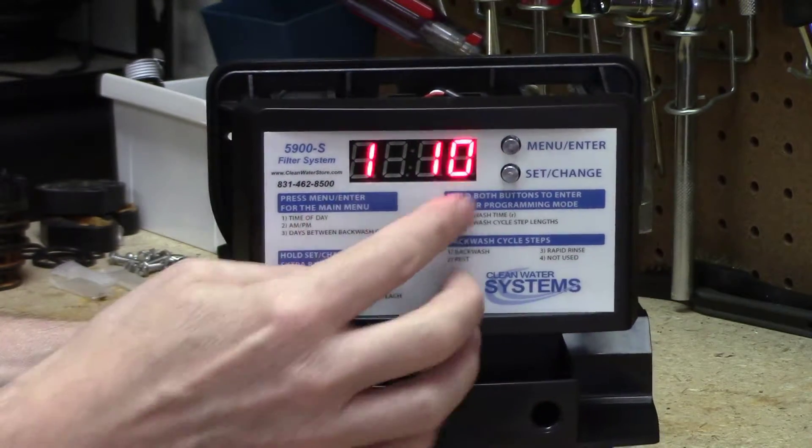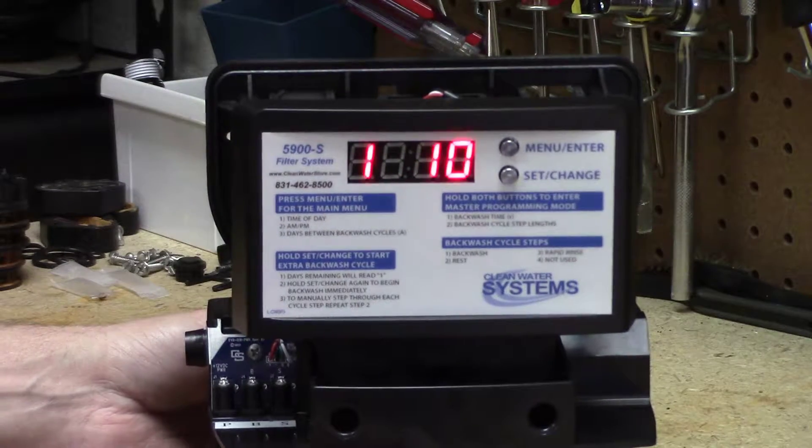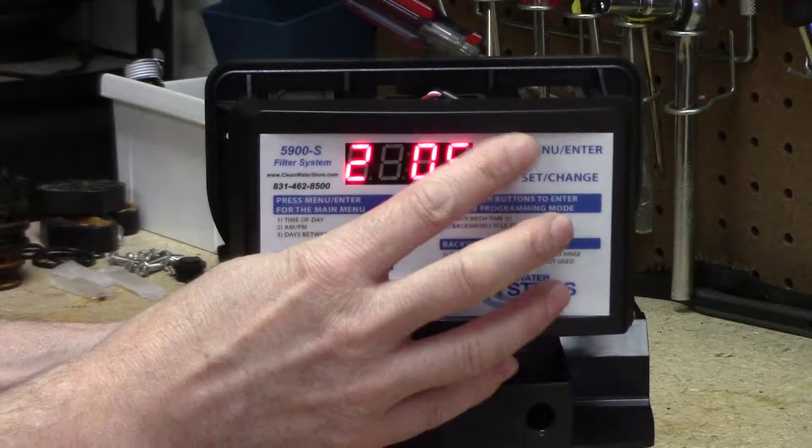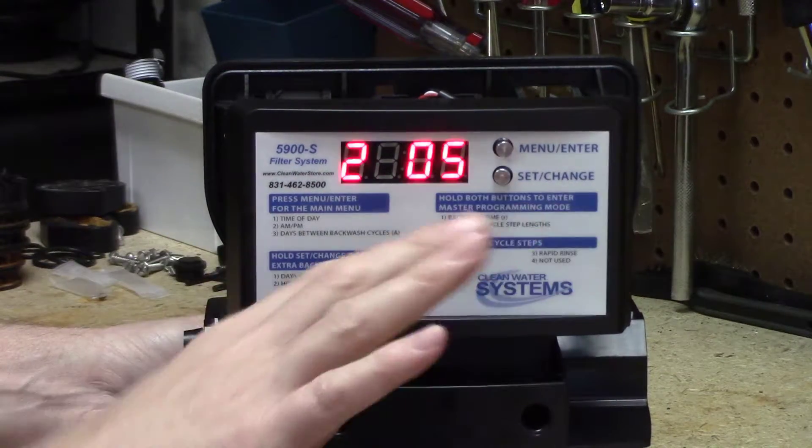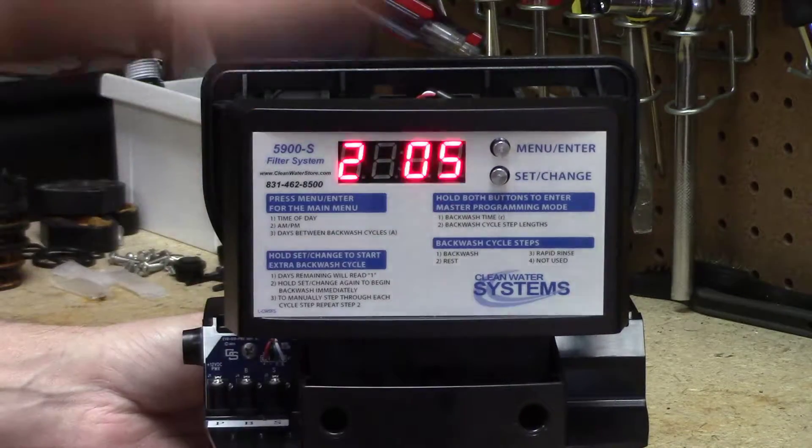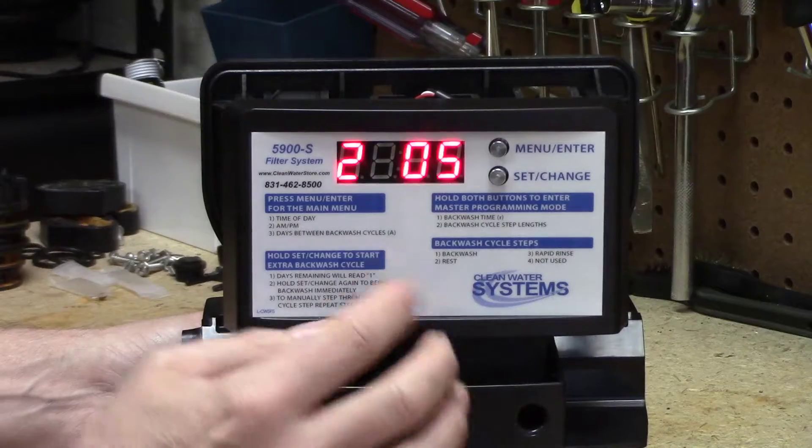The first cycle step is 10 minutes. That's what the valve comes pre-programmed to, so you rarely need to change that. The next step is five minutes. It's a rest cycle—the valve isn't doing anything during there. It's just waiting after we agitated it during the backwash. We're giving it a few minutes to settle back down again.